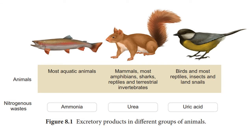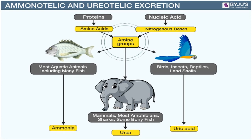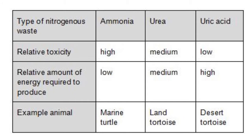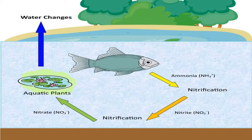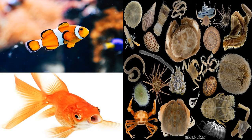In animals, the main excretory products vary. The liver and the kidneys clear many substances from the blood, and the excreted substances are then removed from the body in the form of urine or faeces. If an organism excretes ammonia as its nitrogenous waste product, it is grouped as ammoniotelic. These organisms need a lot of water as ammonia is very toxic. Most aquatic organisms excrete ammonia directly into the external environment.